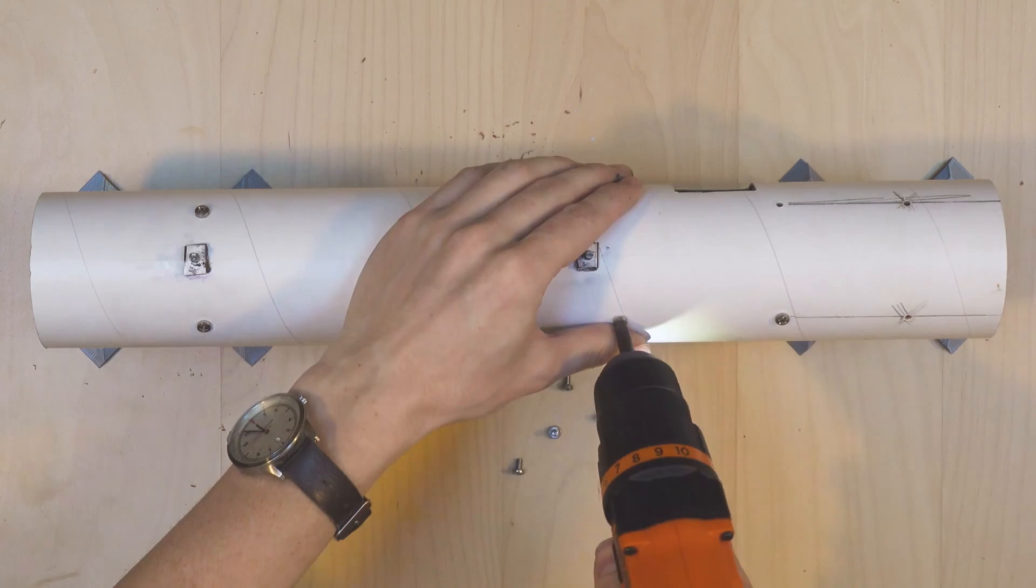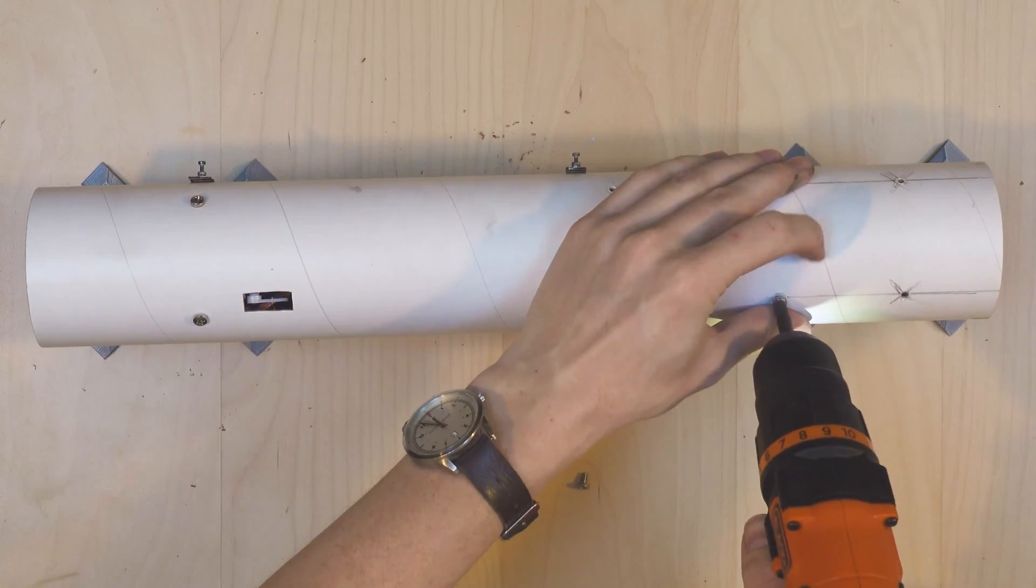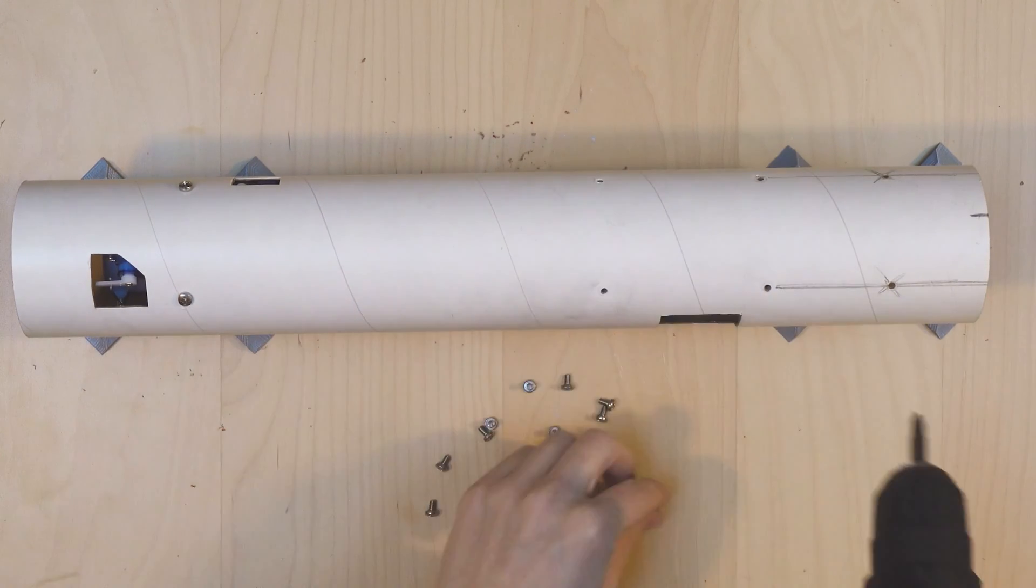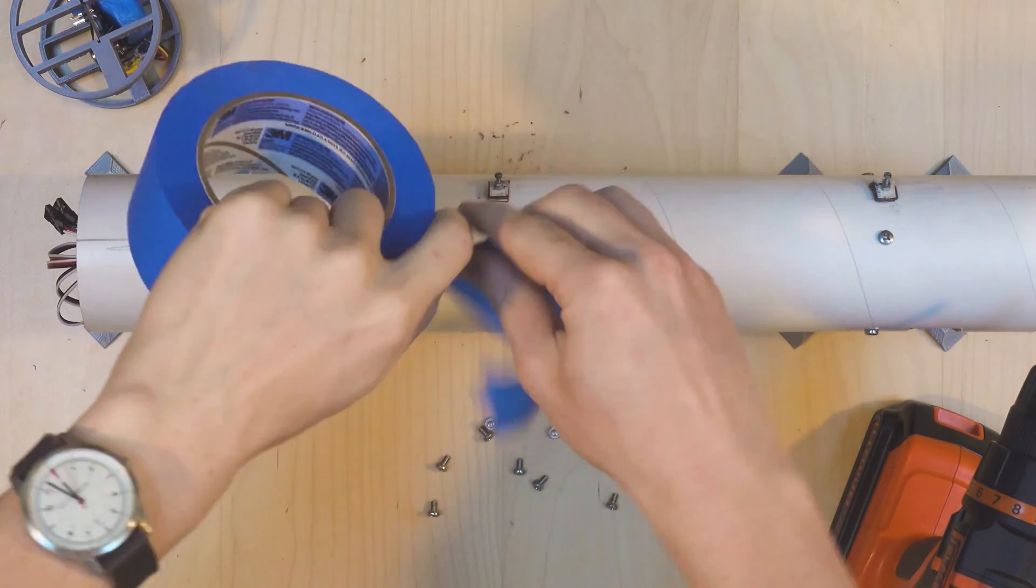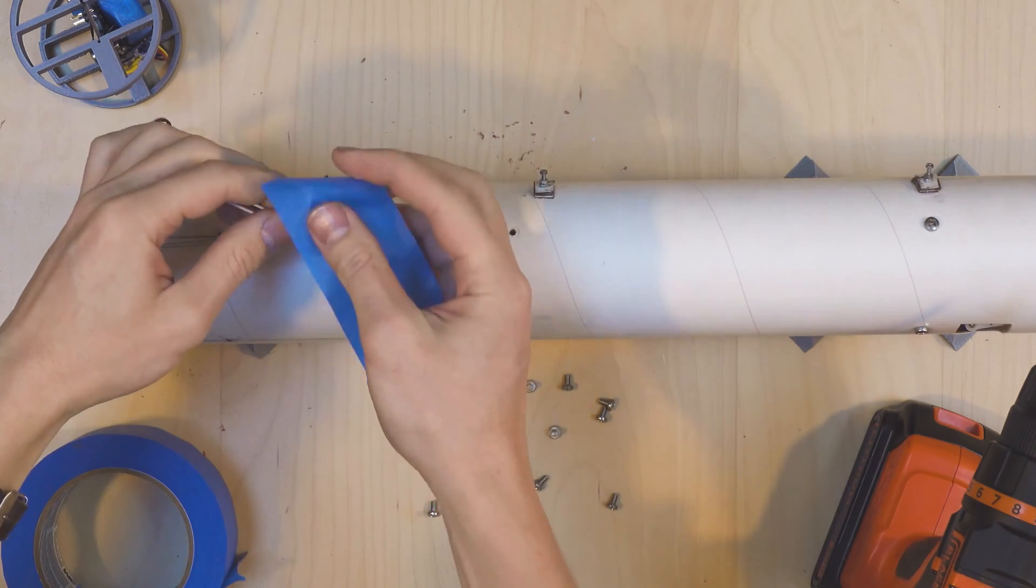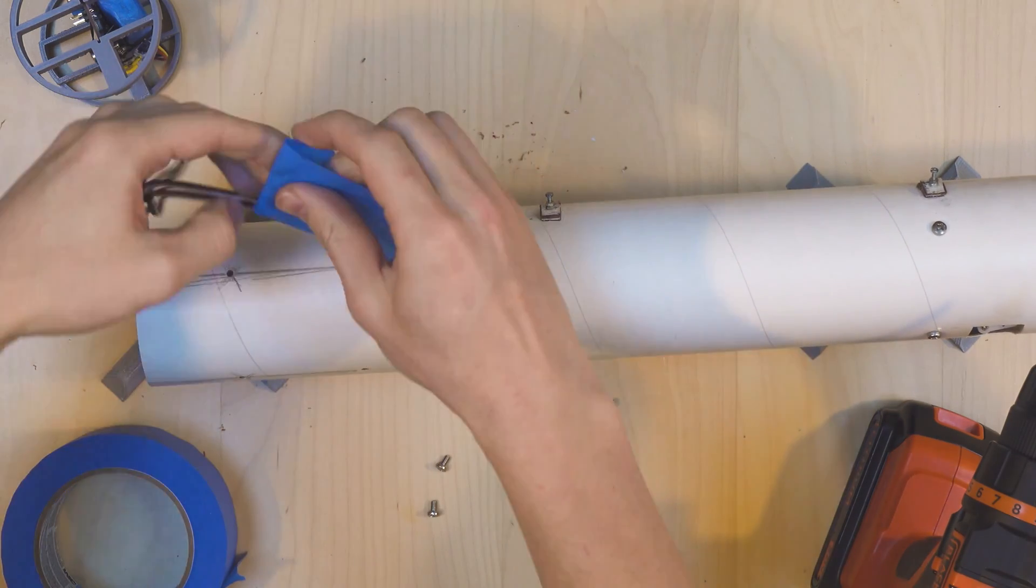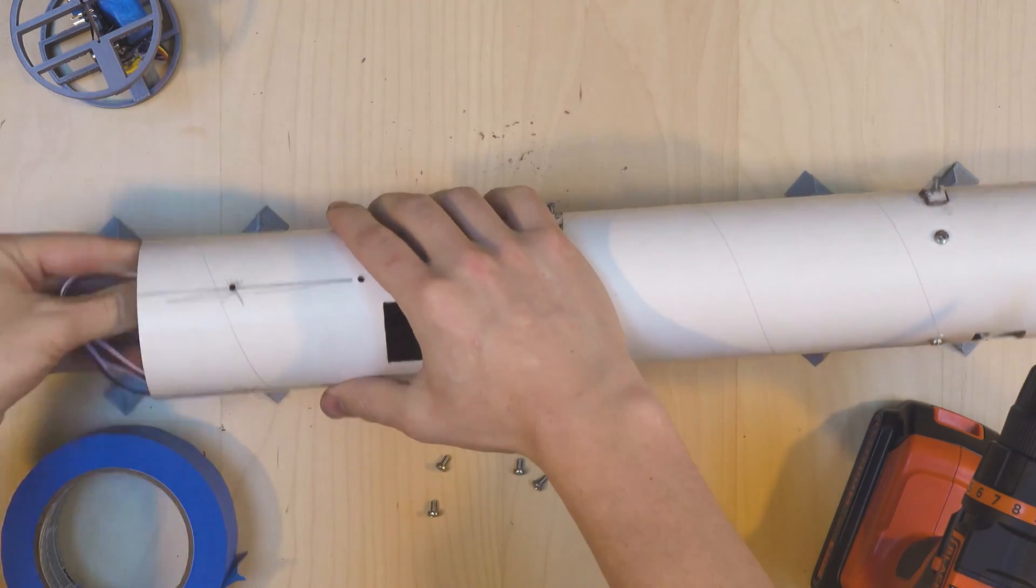We're going to be painting this rocket soon, but we first need to remove the flight computer. The vectoring mount can stay in the rocket. It performs just fine with paint, and it looks cooler that way too. But the flight computer cannot, and does not do well with paint on it. The only change to make on the vectoring mount is to tape up the exposed leads so they don't get paint on them.